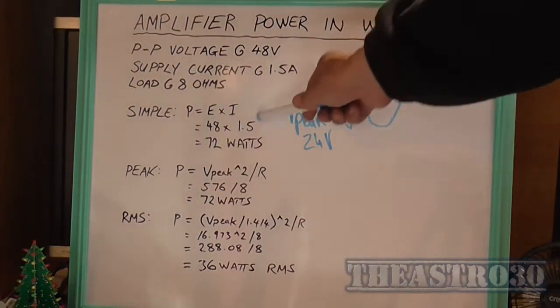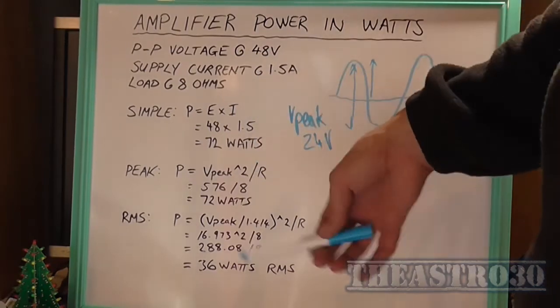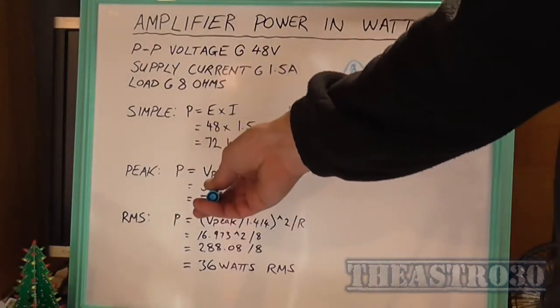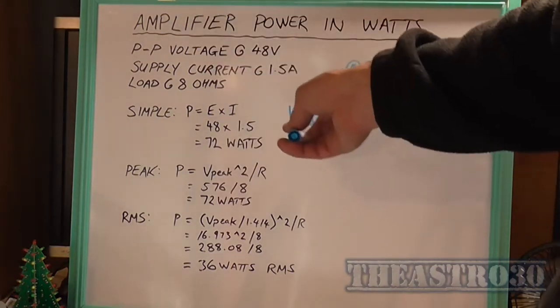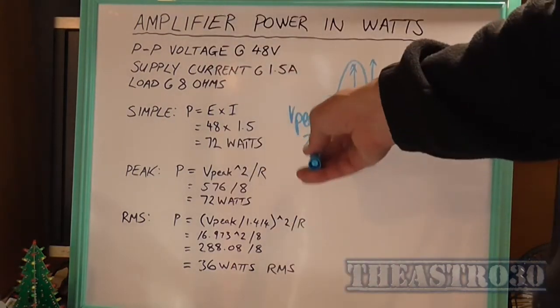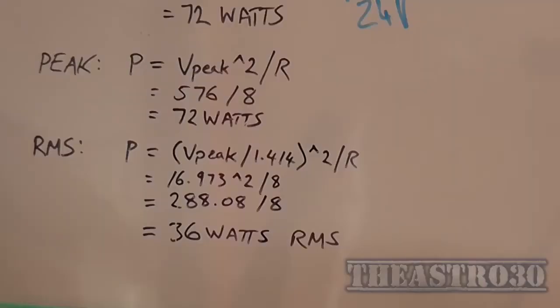You can always measure the current, but either of these will work. But you've got to remember, in this peak one, you've got to use V peak, or half peak to peak. You cannot use peak to peak. It has to be half of it.